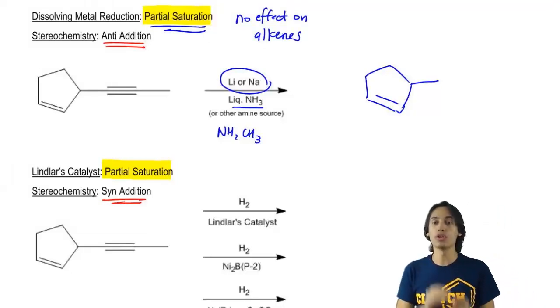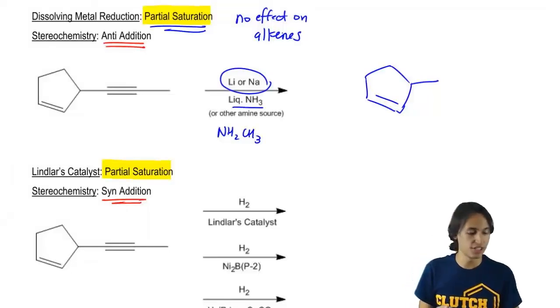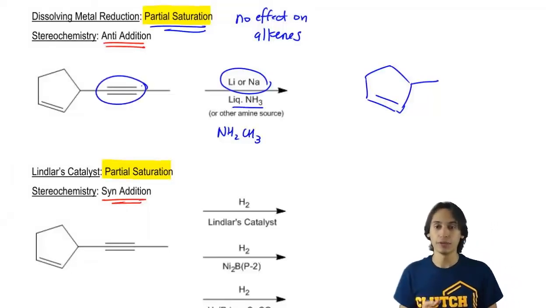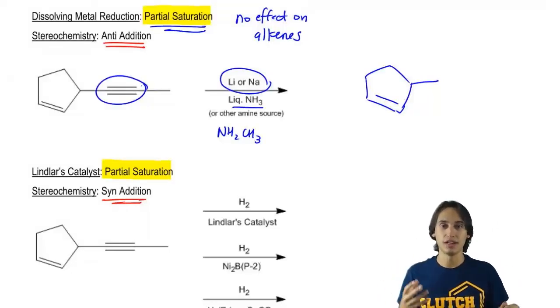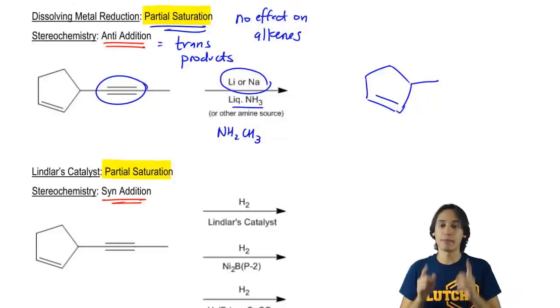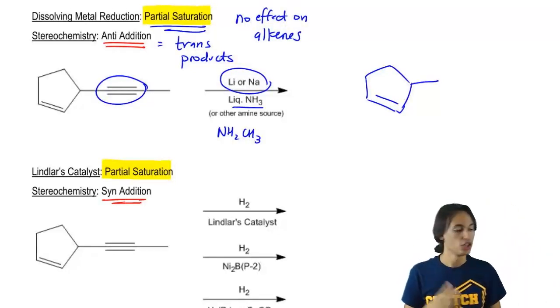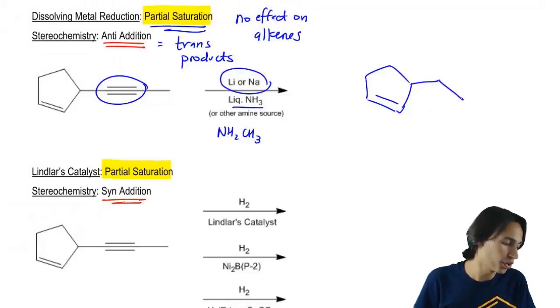No effect on alkenes. It's only going to work on triple bonds. So now I've got this triple bond. Is it going to work on this one? Absolutely. Well, what does anti-addition mean? Anti-addition, if you remember, that just means I have trans products. So what that means is that I would expect that my hydrogens are going to add from different sides of this double bond.